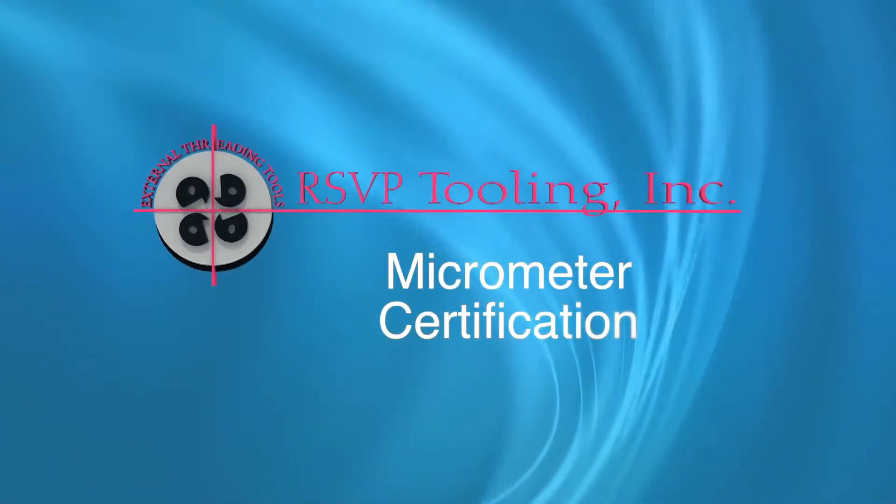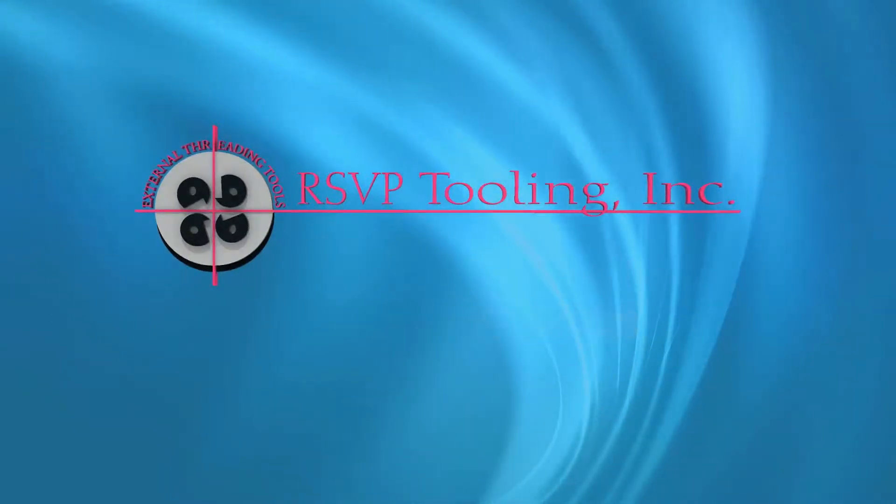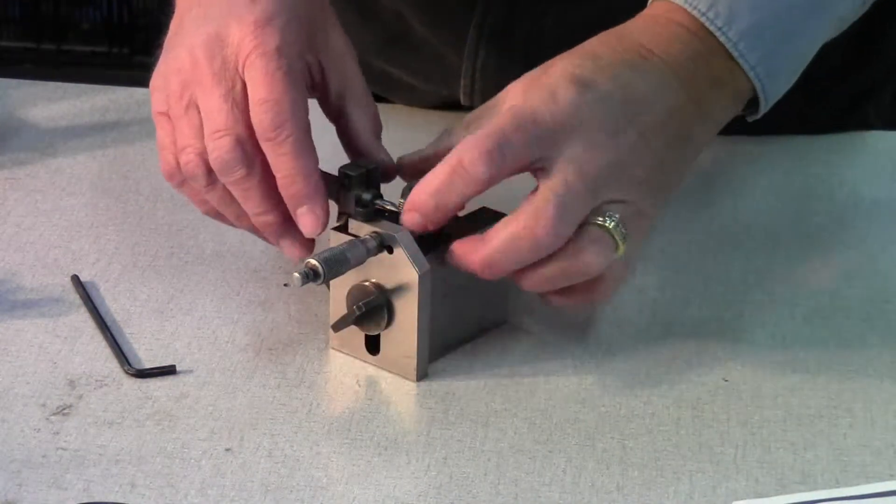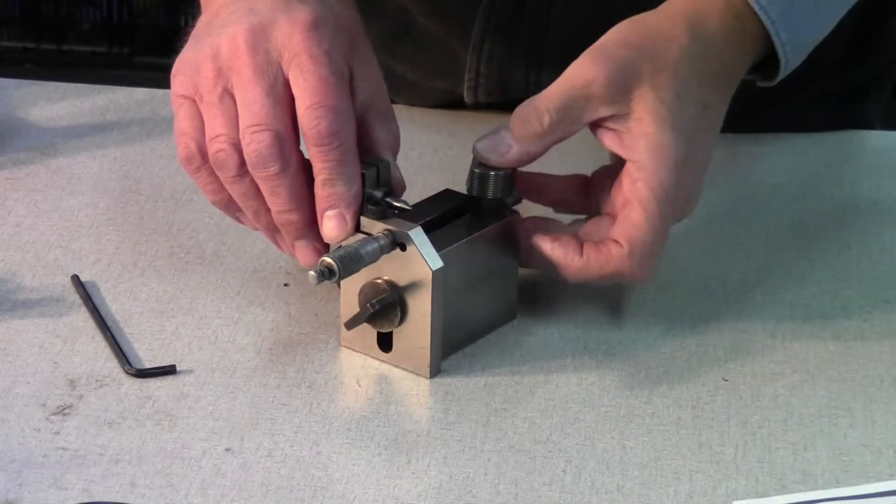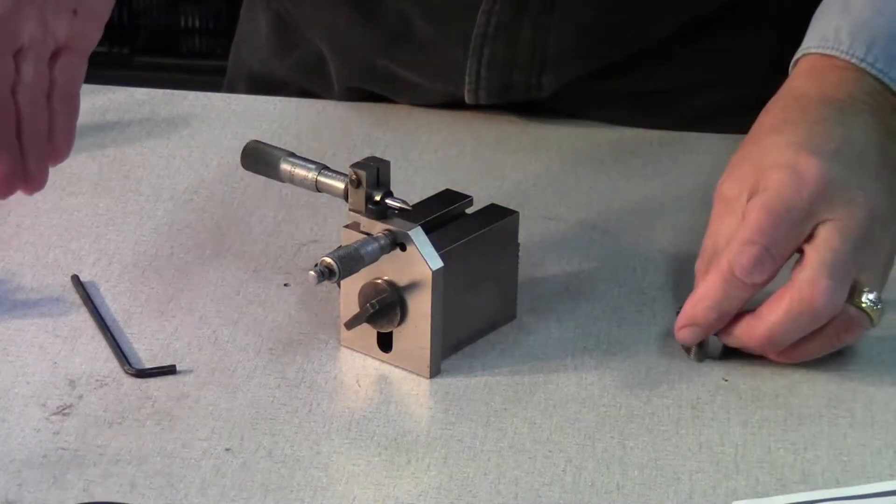This is an RSVP Tooling instructional YouTube video on how to certify your circular chaser micrometer. Certification is necessary to ensure that the micrometer readings are always the same from one day to the next.